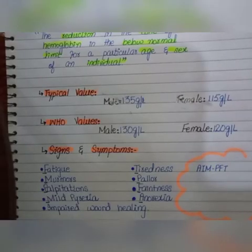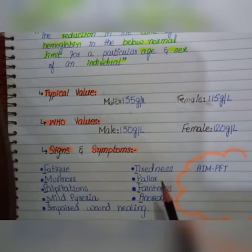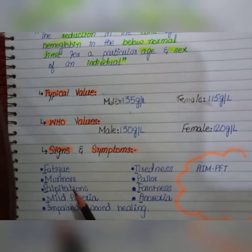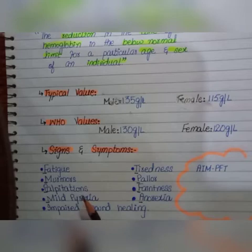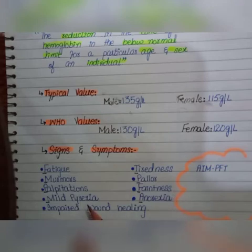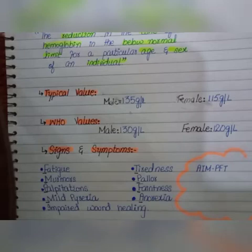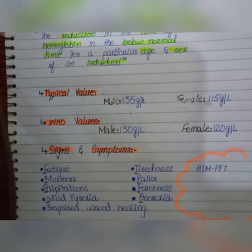The signs and symptoms of an anemic person include: fatigue, tiredness, murmurs, pallor (paleness of the skin), palpitations (irregular heartbeat), faintness, mild pyrexia (increased body temperature), anorexia (eating very little), and impaired wound healing. These are all the signs and symptoms of an anemic person.